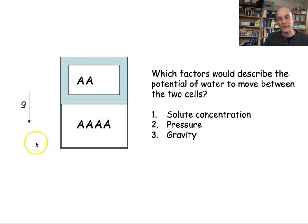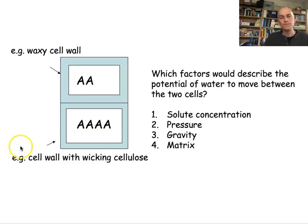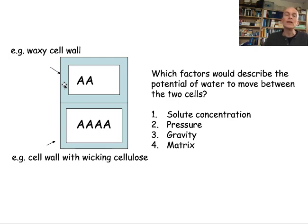The third aspect is gravity, which is particularly important for tall plants like trees, where there is a difference in gravity potential between the crown of a tall tree and the trunk or roots. Lastly, there is the matrix — the consistency of the cell wall. For example, a waxy cell wall repels water, pushing it away, whereas a cell wall composed of cellulose or a substance with wicking qualities will attract water.